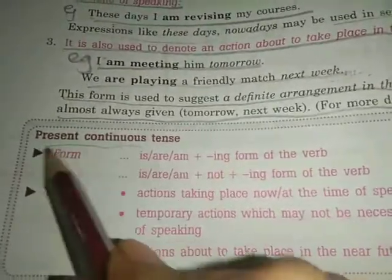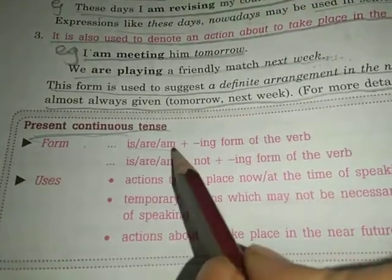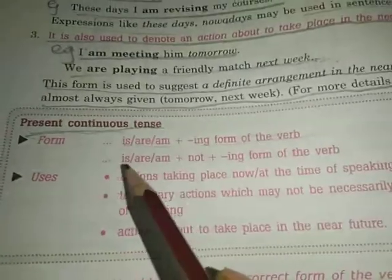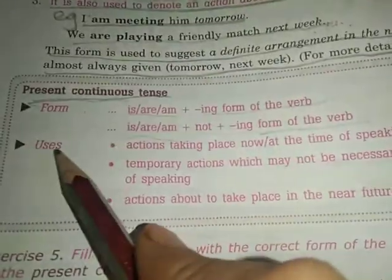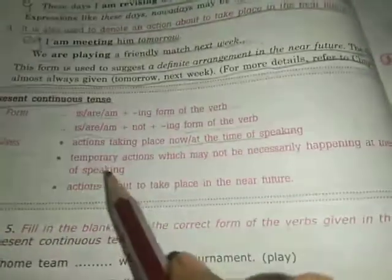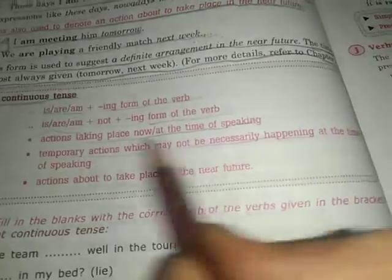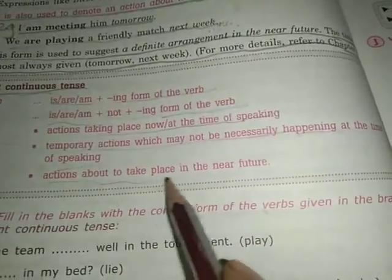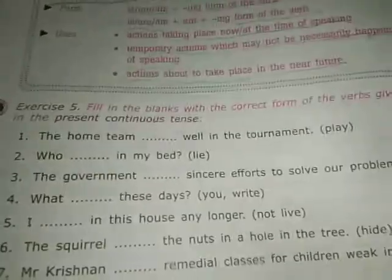Okay. So let us see what we studied in continuous tense. In general, the form is: is/are/am plus 'ing' form of the verb. For negative: is/are/am plus not plus 'ing' form of the verb. Its uses are: actions taking place now or at the moment, temporary actions which may not necessarily be happening at time of speaking, and actions about to take place in the near future. Now let us solve this exercise quickly.